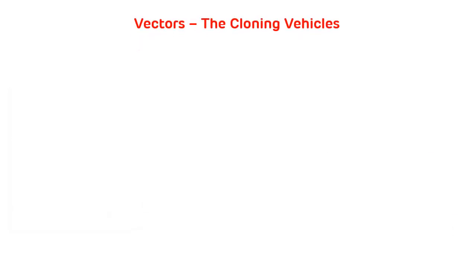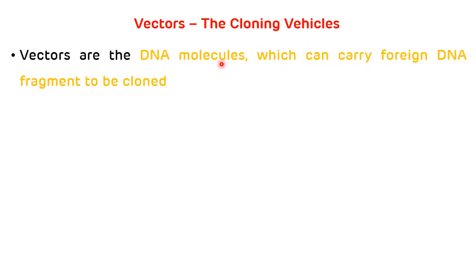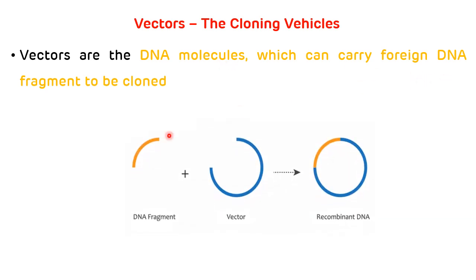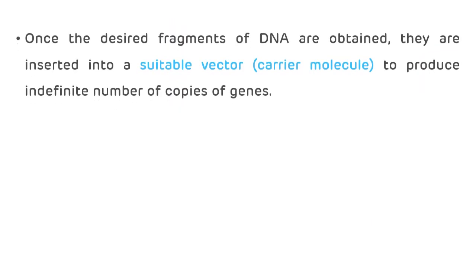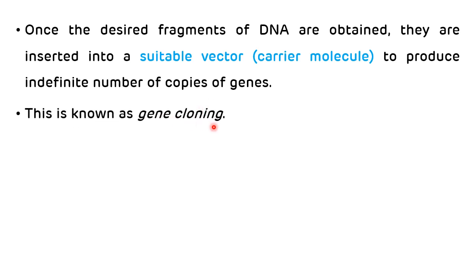First, the definition of vectors, which are also called cloning vehicles. Vectors are DNA molecules which can carry foreign DNA fragments to be cloned. This foreign DNA fragment is carried by the vector to produce recombinant DNA. Once the desired fragments of DNA are obtained, they are inserted into a suitable vector to produce an indefinite number of copies of genes. This is known as gene cloning.